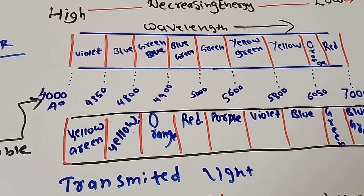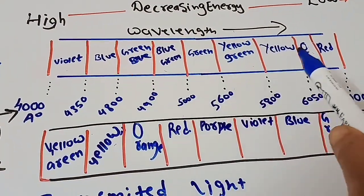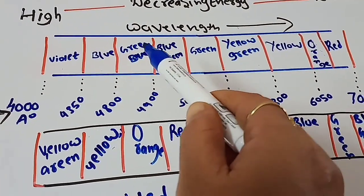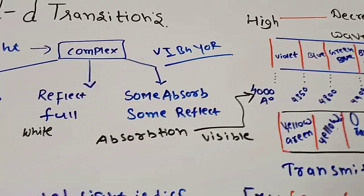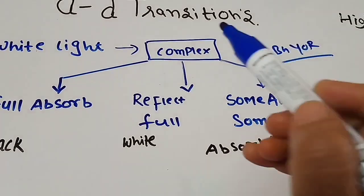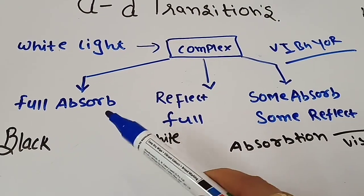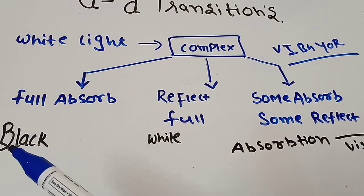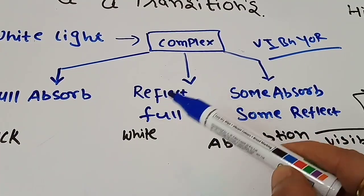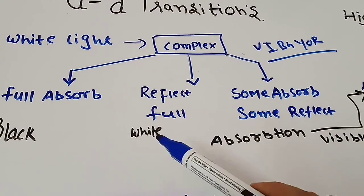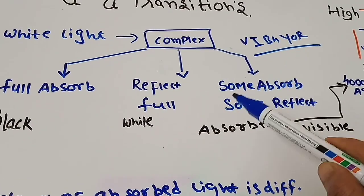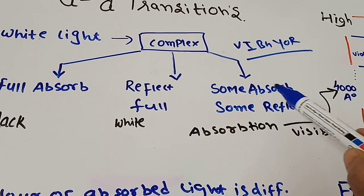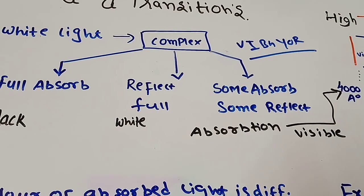When any complex absorbs light, it will not appear to be the color of the absorbed light. If a complex absorbs the full visible range (VIBGYOR), it will appear black. If it reflects all the colors, it will appear white. If it absorbs some and reflects some, it will have a particular color — the color of the transmitted light.